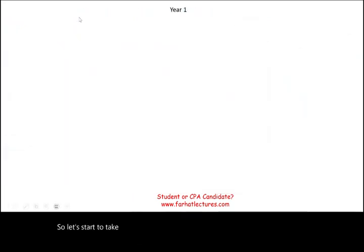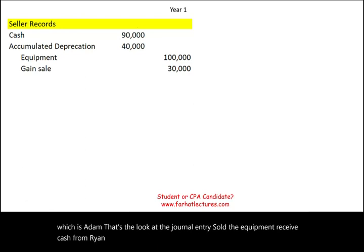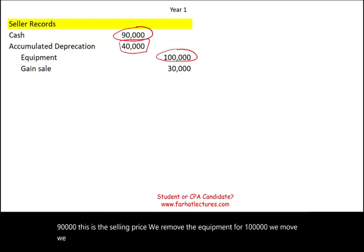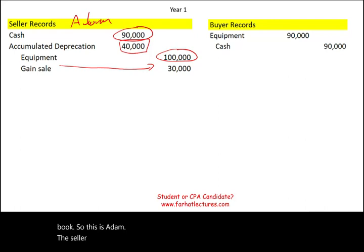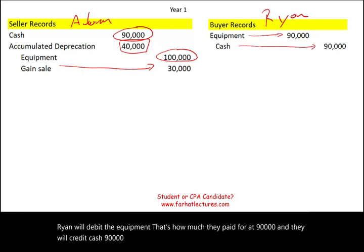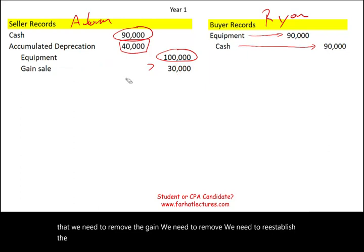Let's look at the journal entries, starting with the seller's record, which is Adam. Adam received cash $90,000, removed equipment at $100,000, removed accumulated depreciation of $40,000, and booked a gain of $30,000. For the buyer, Ryan debits equipment $90,000 and credits cash $90,000. From an inter-entity perspective, we need to remove the gain and reestablish the equipment at historical cost. This asset has a remaining life of 10 years.